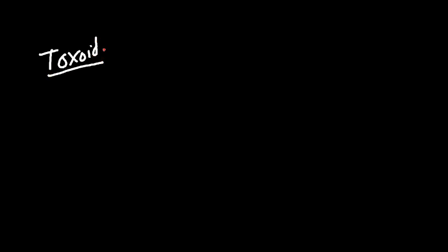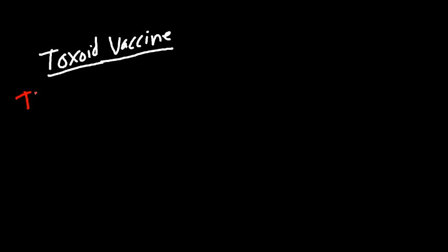We've got one more type to talk about: the toxoid vaccine. We've been talking about the actual bug — either the virus or the bacteria, the actual body of that bug. However, for toxoid vaccines, we're going to be referring to the toxin of that bug. A microbe will secrete toxins, and these toxins will go into the body and produce disease.